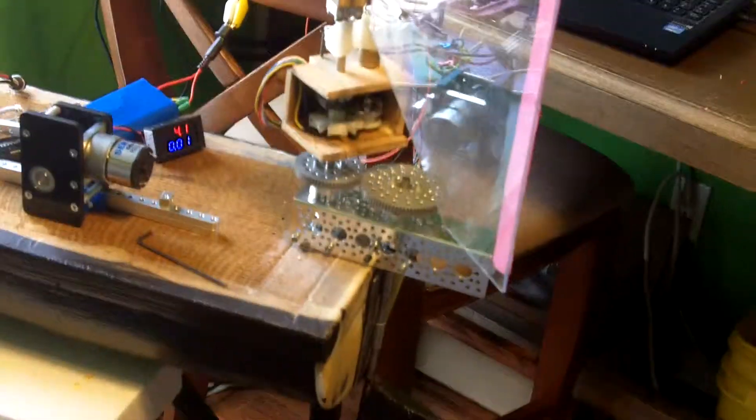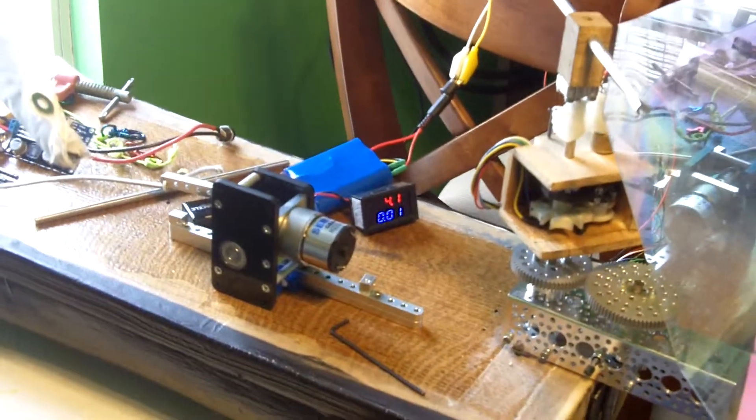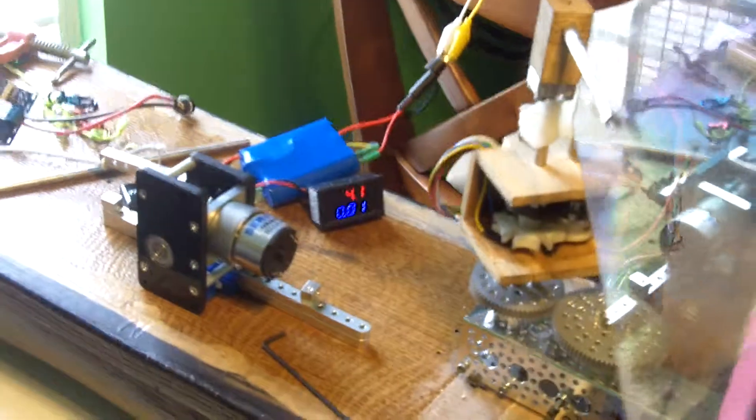So here you can see the wind vane mounted on the stern of the boat. You can see a little volt and amp meter there showing the power coming into it.